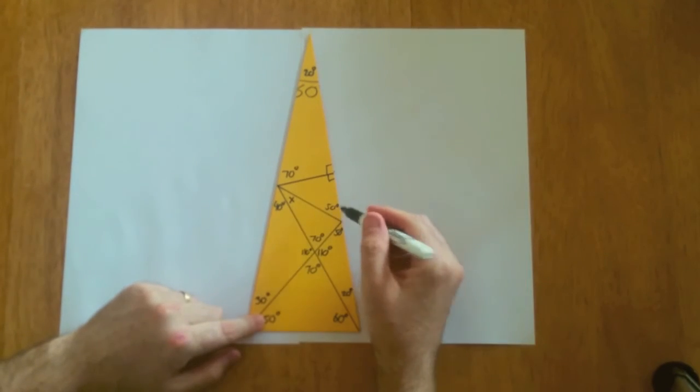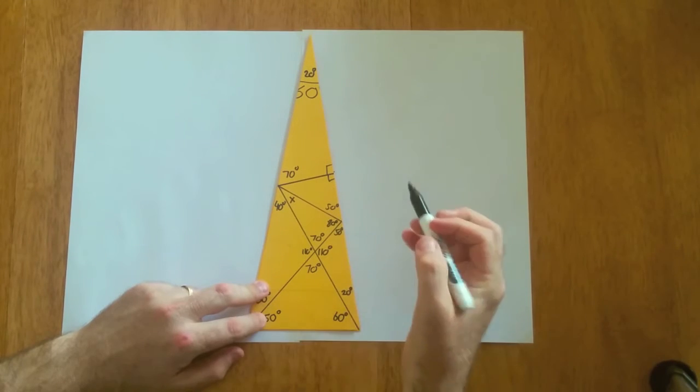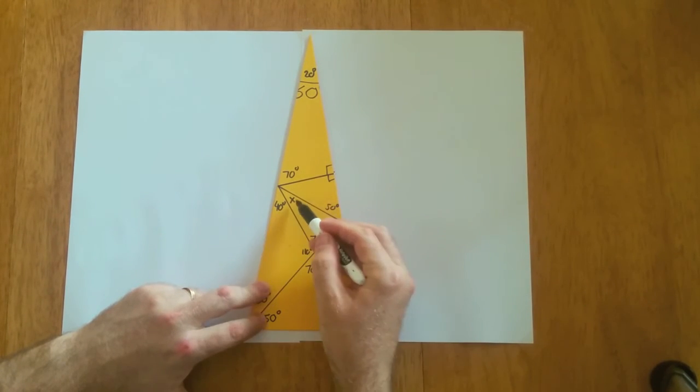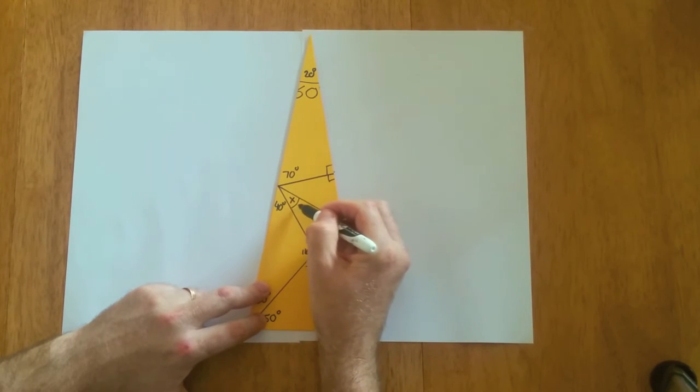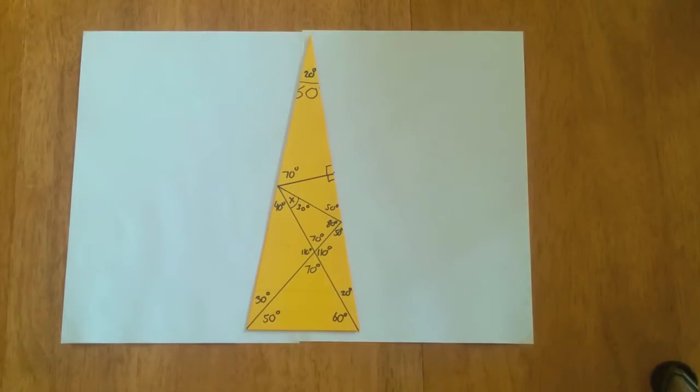Thanks to these copies, we could work out that this is a 50 degree angle. Because that's 50 degrees, and that's 50 degrees, this is 80 degrees. And finally, we can work out what x is. That's just 30 degrees. And that's how you solve this puzzle.